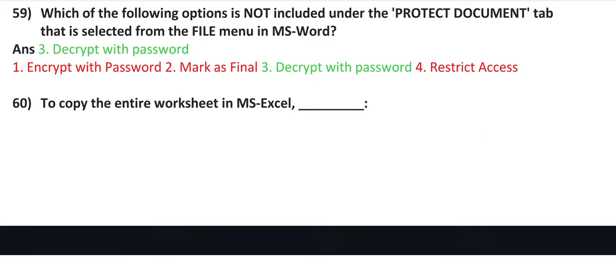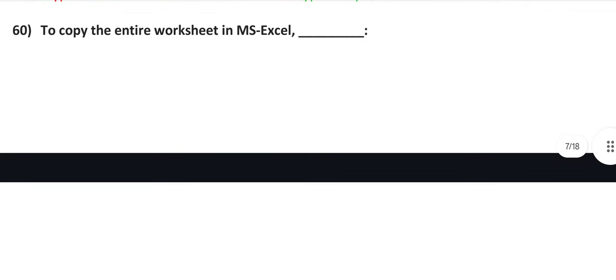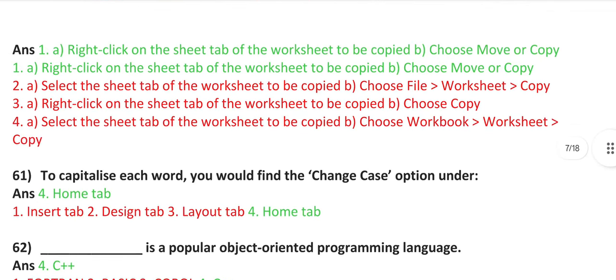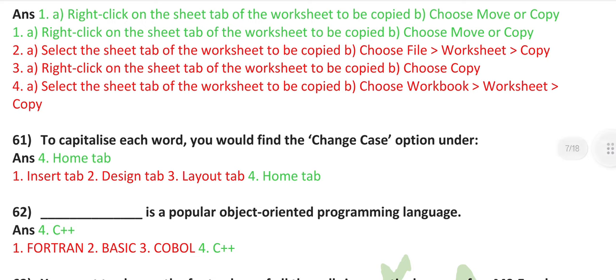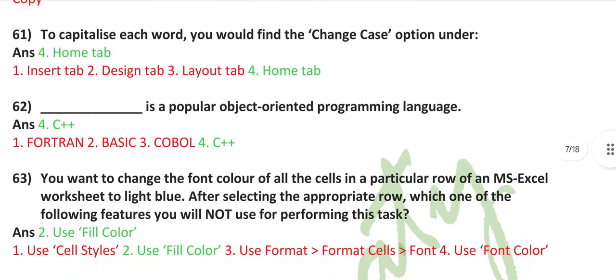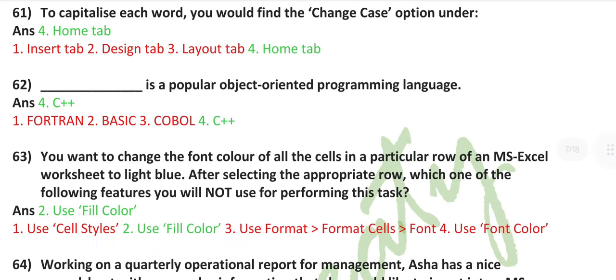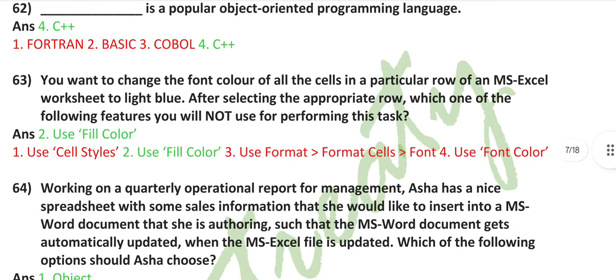Which of the following options is not included under the protect document tab that is selected from the file menu in MS Word? Decrypt with password. To copy the entire worksheet in MS Excel, right-click on the sheet tab of the worksheet to be copied, then choose move or copy. To capitalize each word, you will find the change case option under the home tab. C++ is a popular object-oriented programming language.